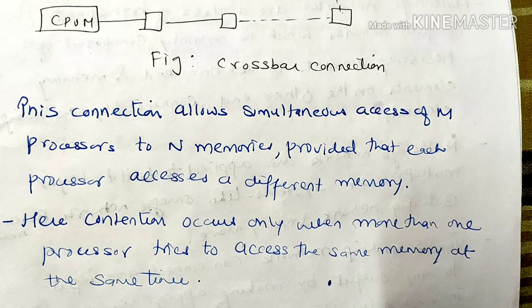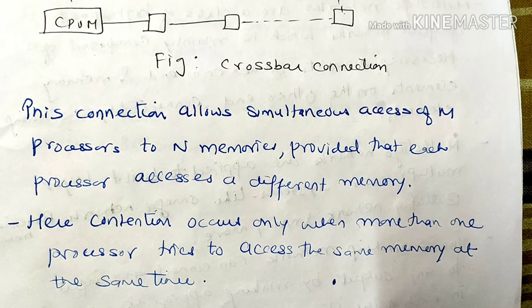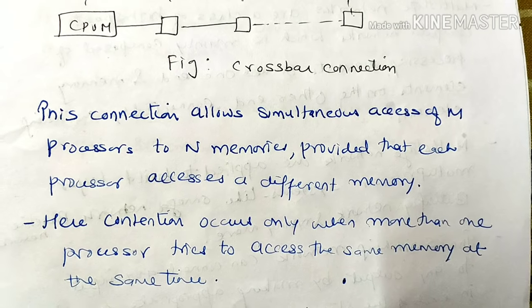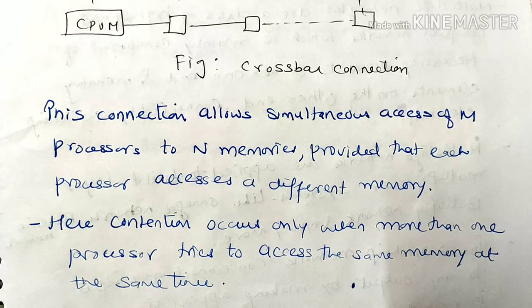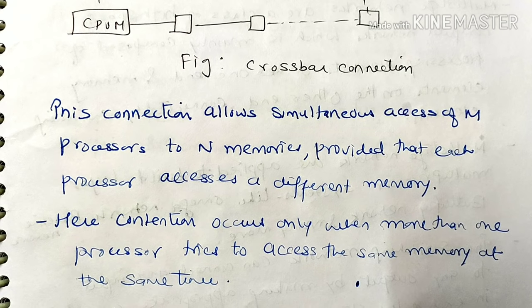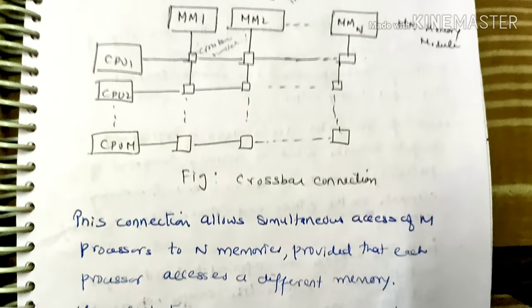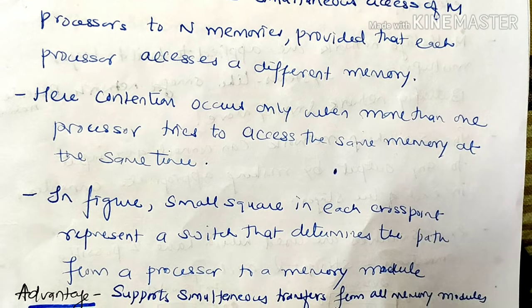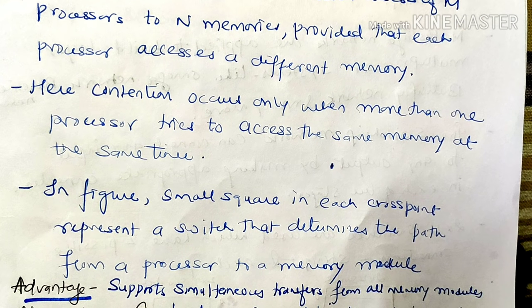Contention occurs only when more than one processor tries to access the same memory at the same time. If multiple processors access one memory module simultaneously, there will be conflict or contention.